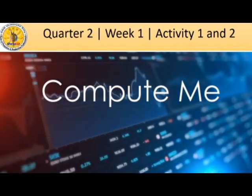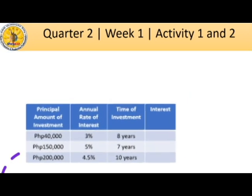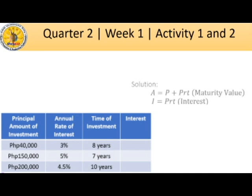Now let us apply what we learned to the following problems. To compute for simple interest, we start with the maturity value formula A equals P plus PRT. Since we are looking for interest, we remove the principal, giving us Interest equals PRT. Substituting the given: 40,000 times 0.03 times 8, using our calculator, we get an interest of 9,600.